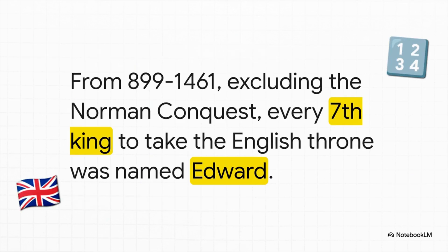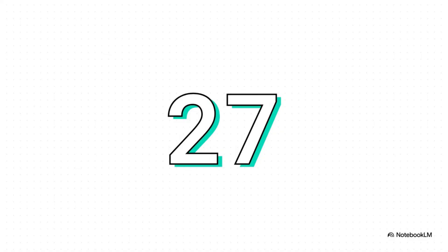Moving to England, we find a totally different kind of pattern but one that's just as bizarrely mathematical. If you set aside the Norman dynasty, a really simple rule pops out: from the year 899 to 1461, every seventh king was named Edward — not around the seventh, but precisely every seventh.